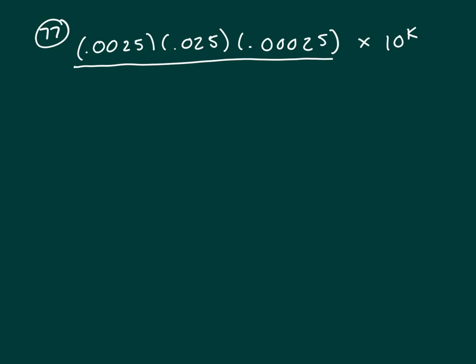So, a form of it. The first number would be 25 times 10 to the... 1, 2, 3, 4... negative 4.